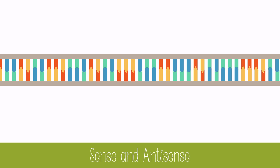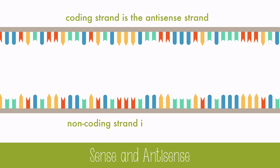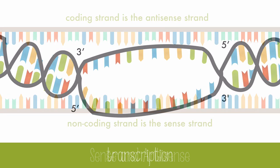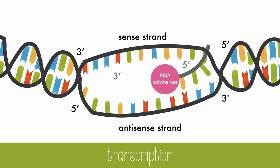DNA is double-stranded, but only one strand is transcribed for protein synthesis. The coding strand is called the antisense strand, and the non-coding strand is the sense strand. Transcription begins at the promoter on the antisense strand. The RNA forms in the 5' to 3' direction, reading the antisense strand in the 3' to 5' direction.